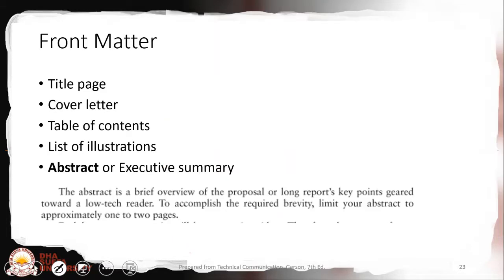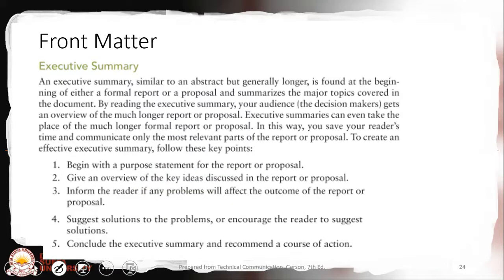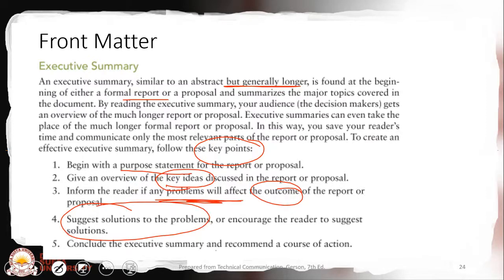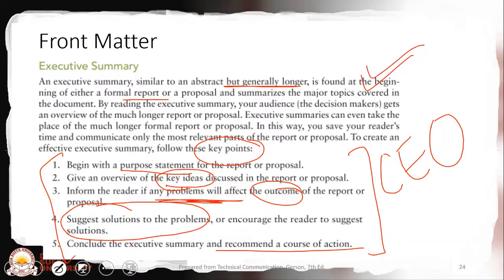Abstract or executive summary is important. The abstract is a brief overview of the proposal or long report and may be one to two pages. Executive summaries are generally longer than abstract and can be found at the beginning of either a formal report or proposal. Key points should begin with the purpose statement, give an overview of key ideas discussed, inform the reader about problems that will be affected by the outcome, suggest solutions, and conclude with recommendations. This is very important and the top management or CEO will be reading this and this should give the complete picture of the report in a short reading.